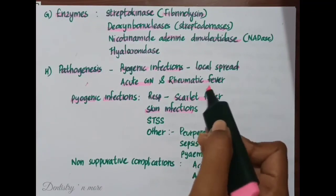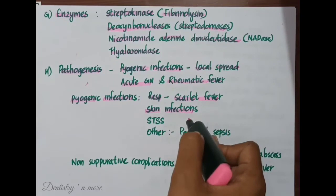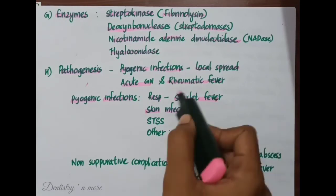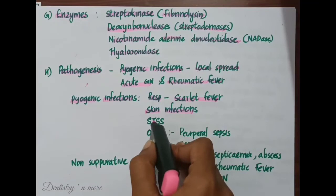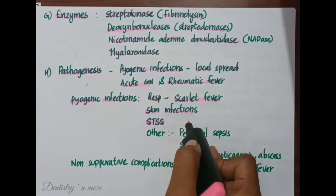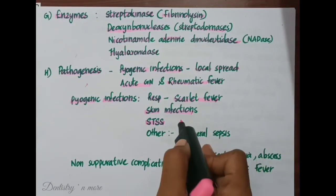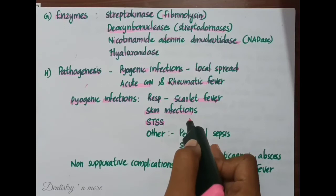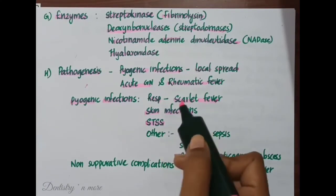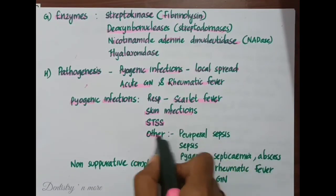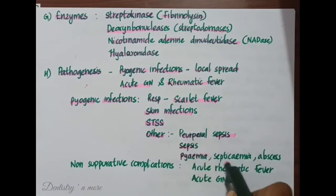Two typical Streptococcal skin infections are erysipelas and impetigo, which are the main causes leading to acute glomerulonephritis in children. Streptococcal toxic shock syndrome (STSS) is a condition in which the entire organ system collapses and can lead to death. STSS resembles Staphylococcal toxic shock syndrome and patients often have bacteremia and necrotizing fasciitis. Other pyogenic infections include puerperal sepsis, pyemia, septicemia, and abscess of internal organs.